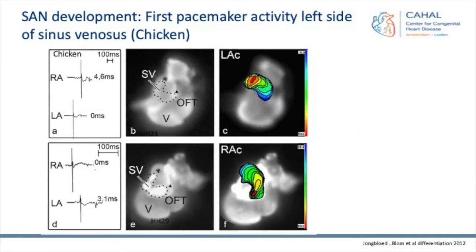If you look at sinus node development, the whole sinus venosus is probably pacemaker active and can show pacemaker activity, but the first activity is actually from the left side, on the left sinus horn, and that shifts at a later stage in chicken hearts to the right side. We measure that with optical mapping and also with microelectrode measurements.